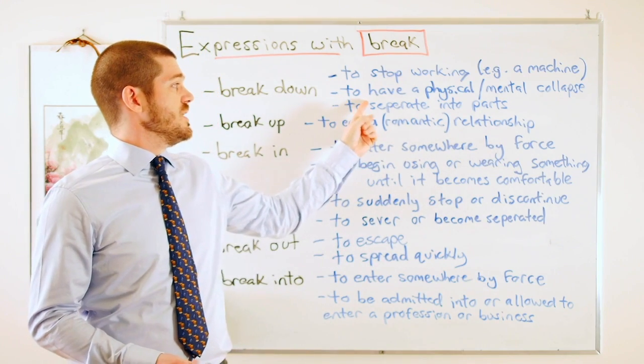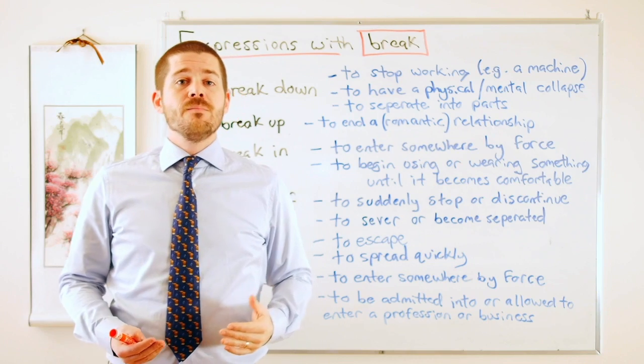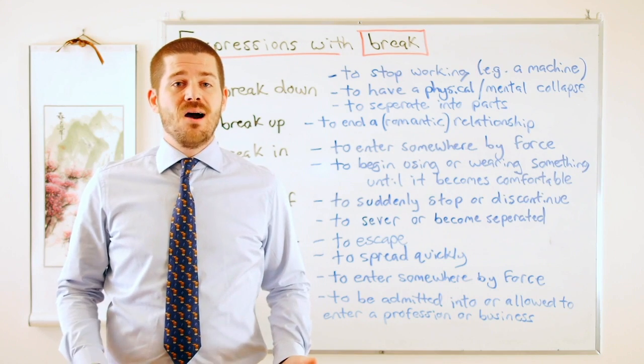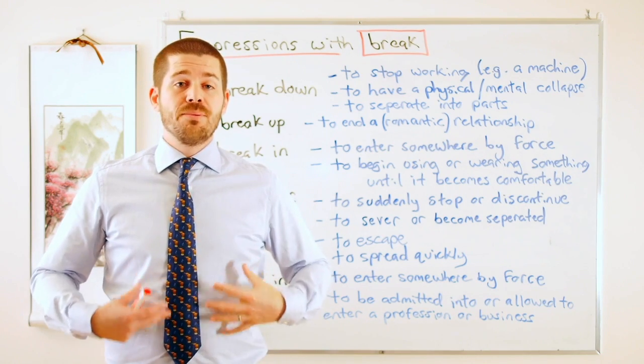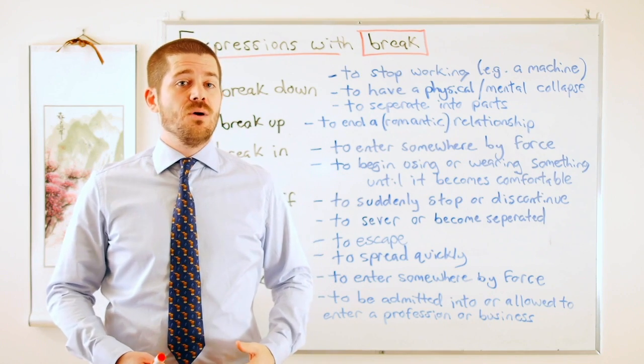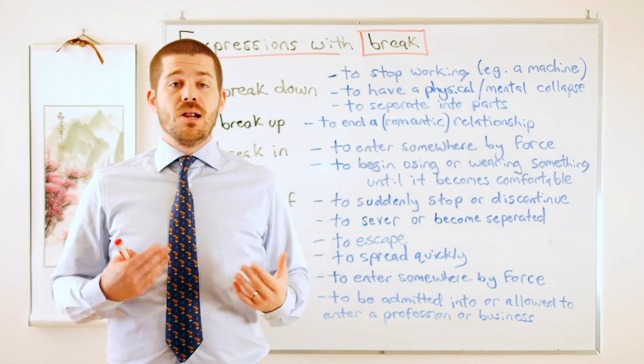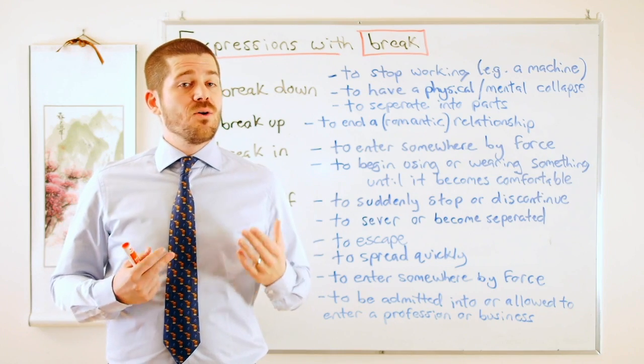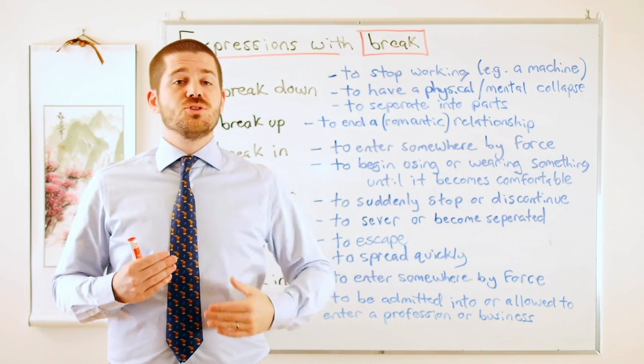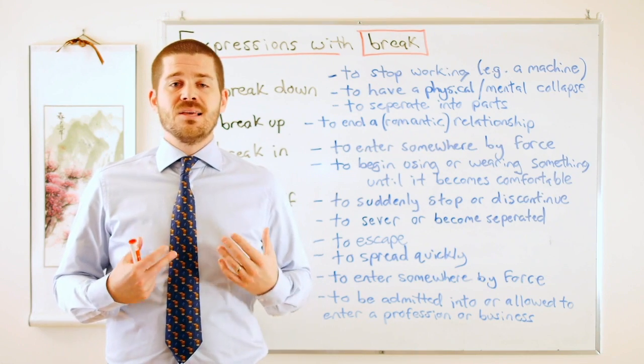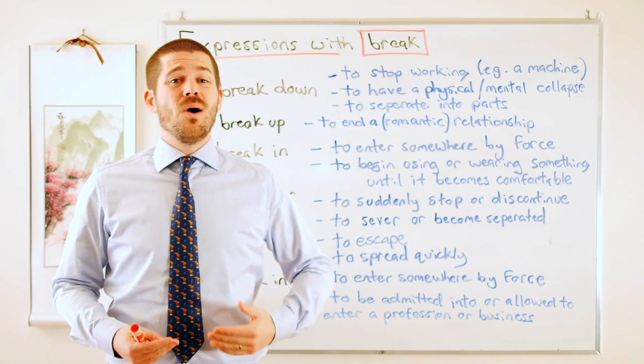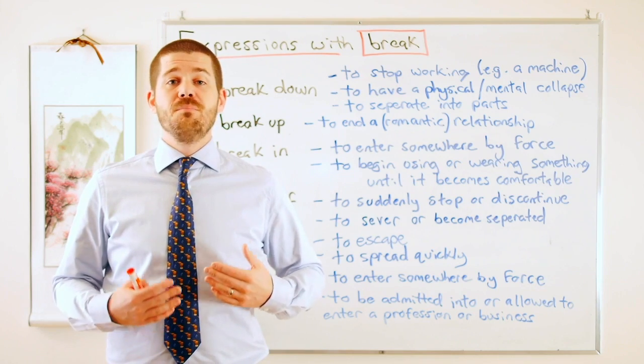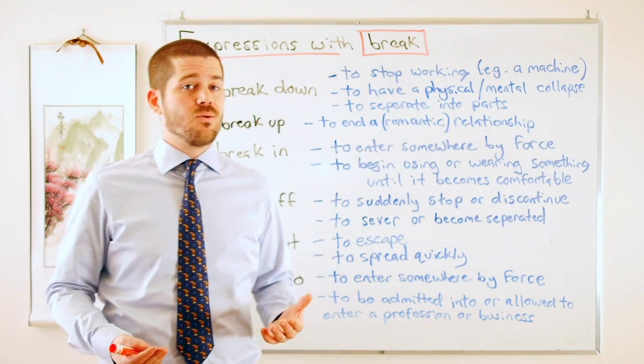The second definition says to have a physical or mental collapse. This is talking about a person. If a person is physically breaking down, that means their body is stopping working. So their minds begin to break down. Another way could be imagine I have a lot of stress at work and I can't sleep, I'm not eating properly. So I could say I'm starting to break down because of stress or because of being overworked.